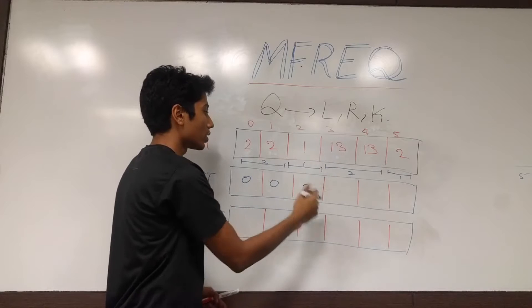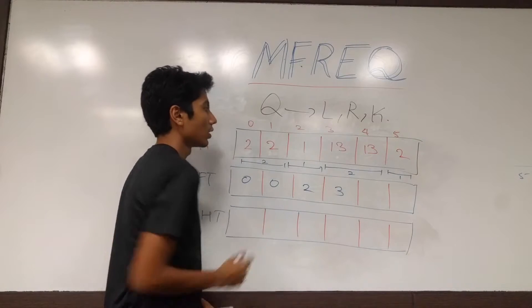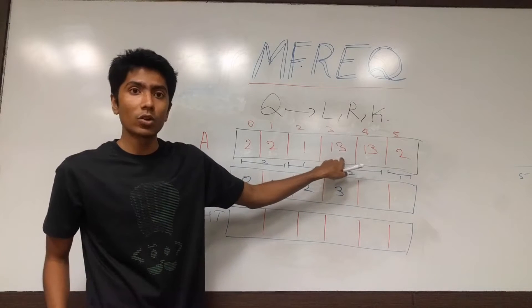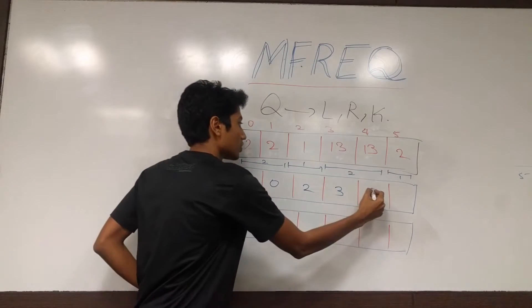Similarly for 13, 1 is not equal to 13, so we store 3. This element though, 13, has its previous element equal to it. So we store this value over there, which is 3.